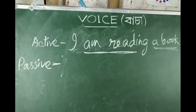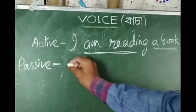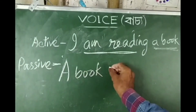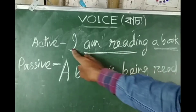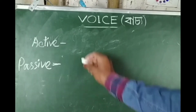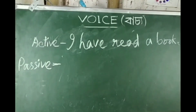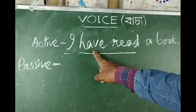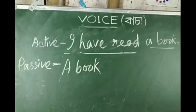Another example: 'I am reading a book.' Here the subject is 'I' and the object is 'a book'. Converting to passive voice, 'a book' becomes the subject. The passive form will be: 'A book is being read by me.'